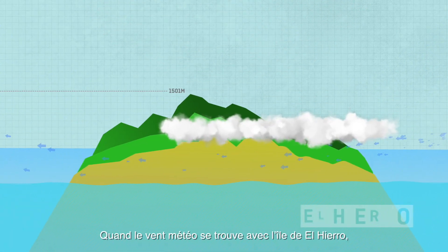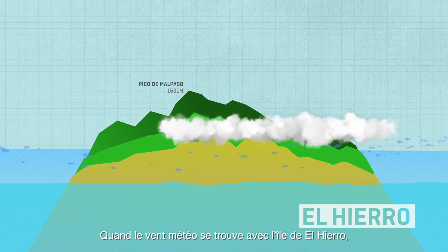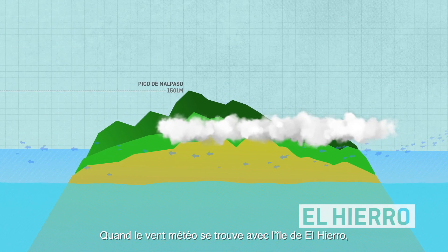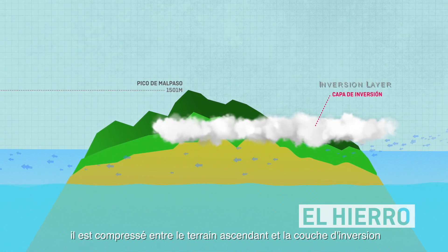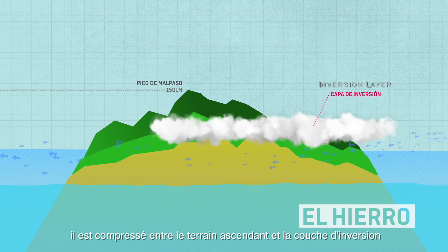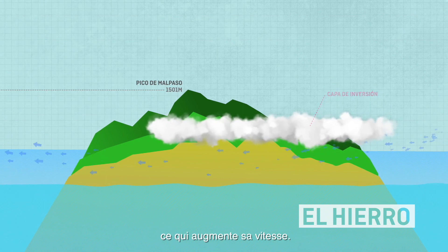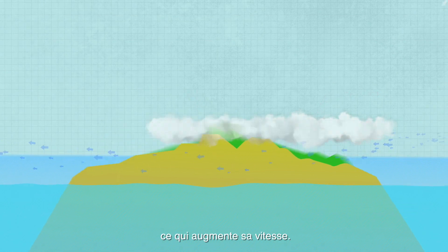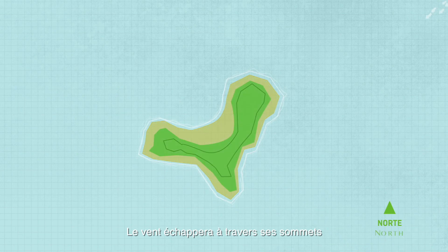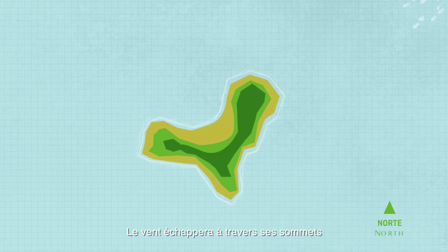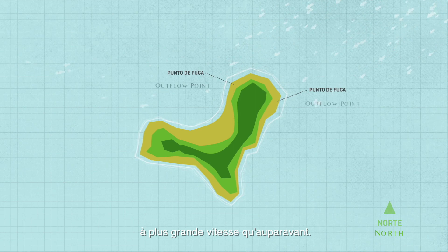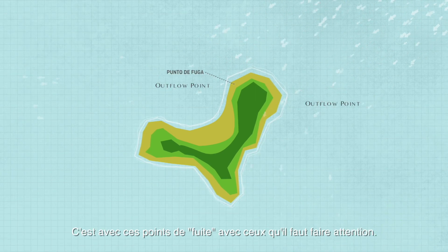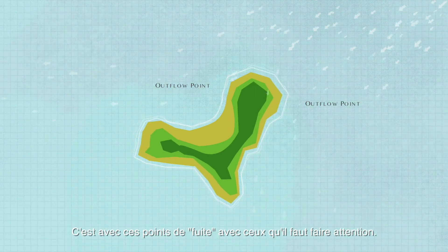When the meteorological wind meets the island of El Hierro, it is compressed between the rising terrain and the inversion layer, with the consequent increase in speed. The wind will escape through its vertices at a higher speed than it was when approaching the island. We must be aware of these outflow points.